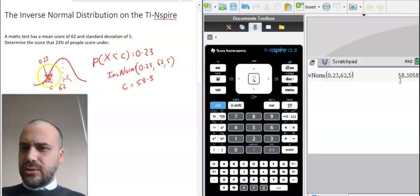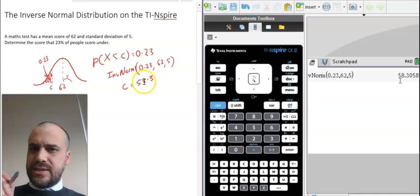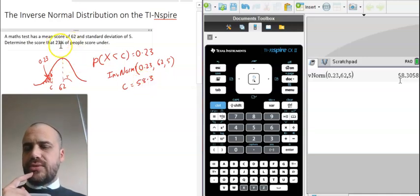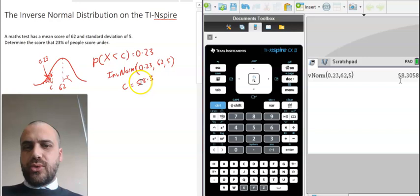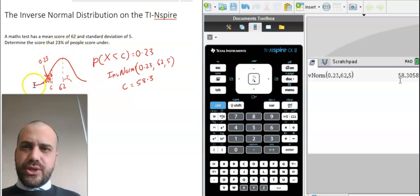So looking here, that looks about right. We definitely expect the number to be less than 62. And how do we interpret that? 58.3 is the score that 23% of people in the class score under. Now, you really want to draw a picture for every single style of these questions because it's not always this easy.